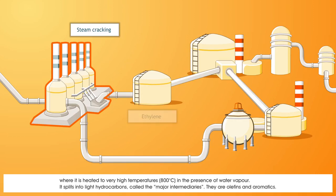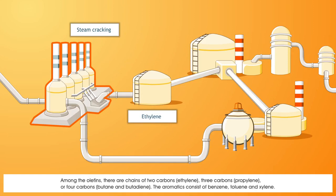They are olefins and aromatics. Among the olefins, there are chains of two carbons, ethylene, three carbons, propylene, or four carbons, butane and butadiene. The aromatics consist of benzene, toluene and xylene.